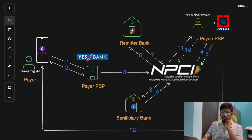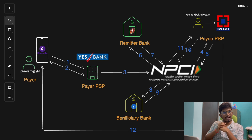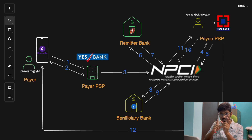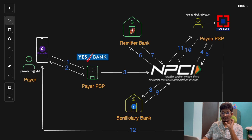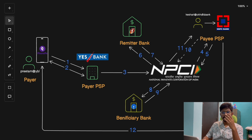You might wonder how banks settle those payments behind the scenes. UPI leverages the IMPS infrastructure, allowing for real-time interbank settlements even outside traditional banking hours. NPCI plays a key role in clearing and settlement between banks. After the transaction is processed, the remitter bank and the beneficiary bank settle the funds through NPCI's infrastructure.